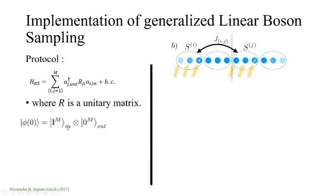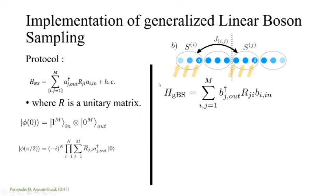Where R is a unitary matrix, our initial state is defined to be one to all M—there's M modes of one called in-states and zero M called out-states. After time pi over two, we evolve the state, and one can show that this gives you the same complexity as original boson sampling.